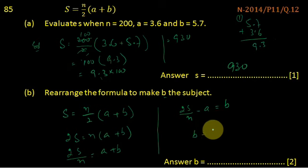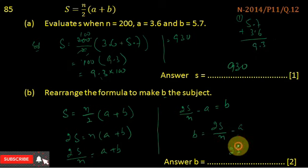So b is basically 2s upon n minus a. The correct answer is b equals 2s upon n minus a.